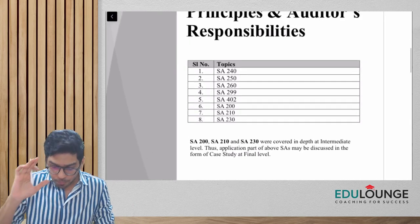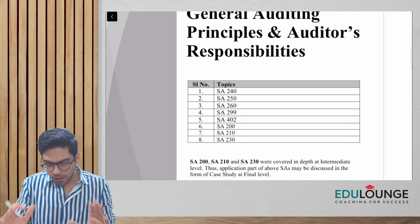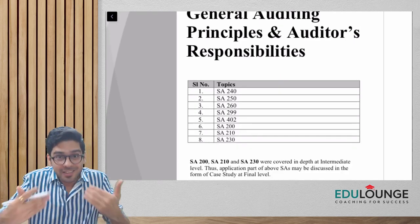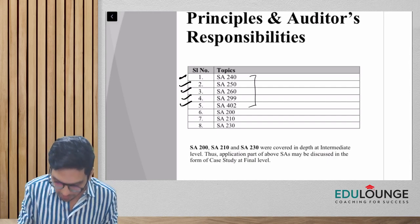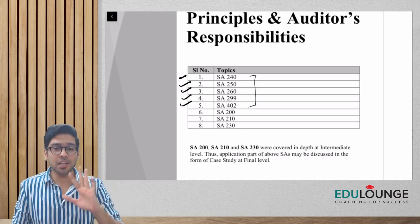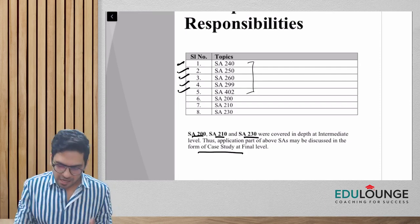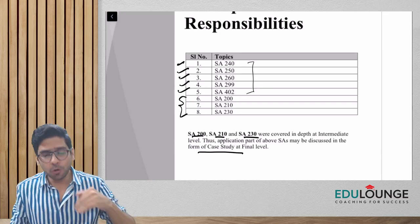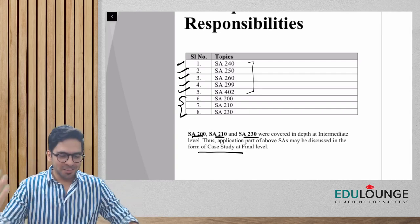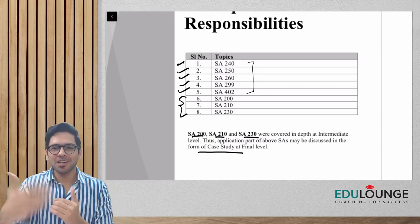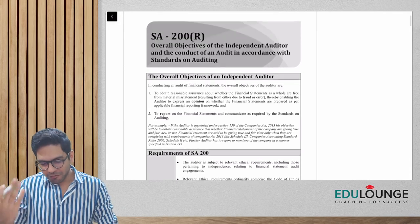The chapter on General Auditing Principles and Auditor's Responsibility primarily covers SA 240, 250, 260, 299, and 402 — five standards — in the ICAI material. However, the syllabus clearly mentions that SA 200, 210, and 230 may be discussed in the form of case studies at the final level, so I have incorporated content on these three standards for your understanding. Today you will feel like you are still at the intermediate level, just revising concepts.